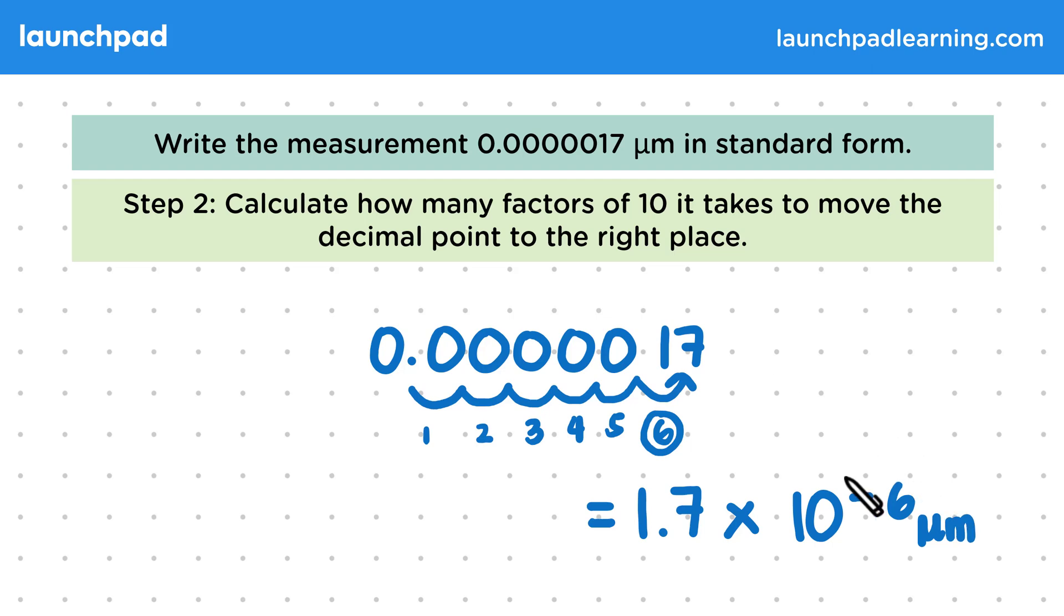Remember that the power of 10 is a minus because it's a small number. You have to divide 1.7 by 10 six times to get to this value. One last thing that you should check before writing your answer is that you've given correct units.